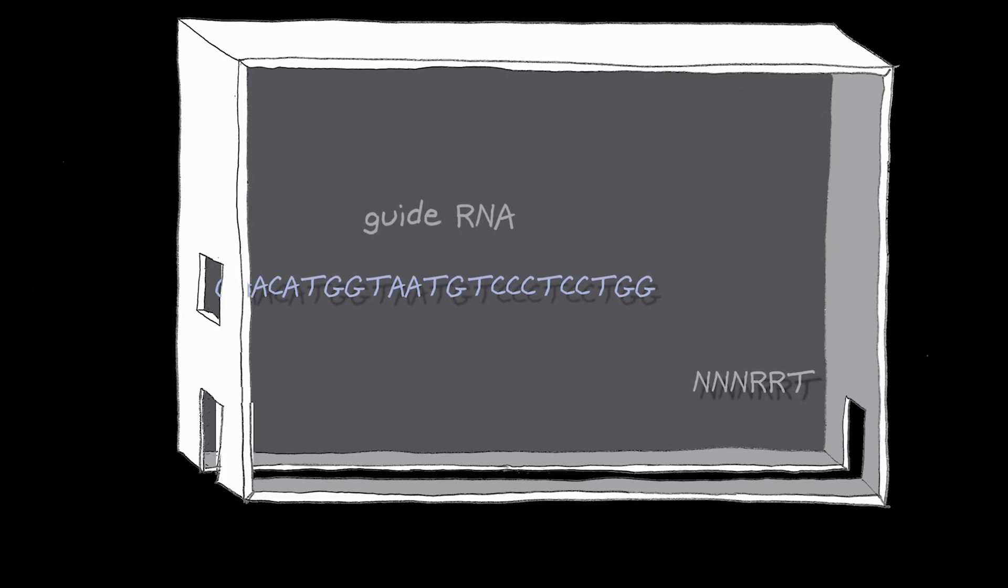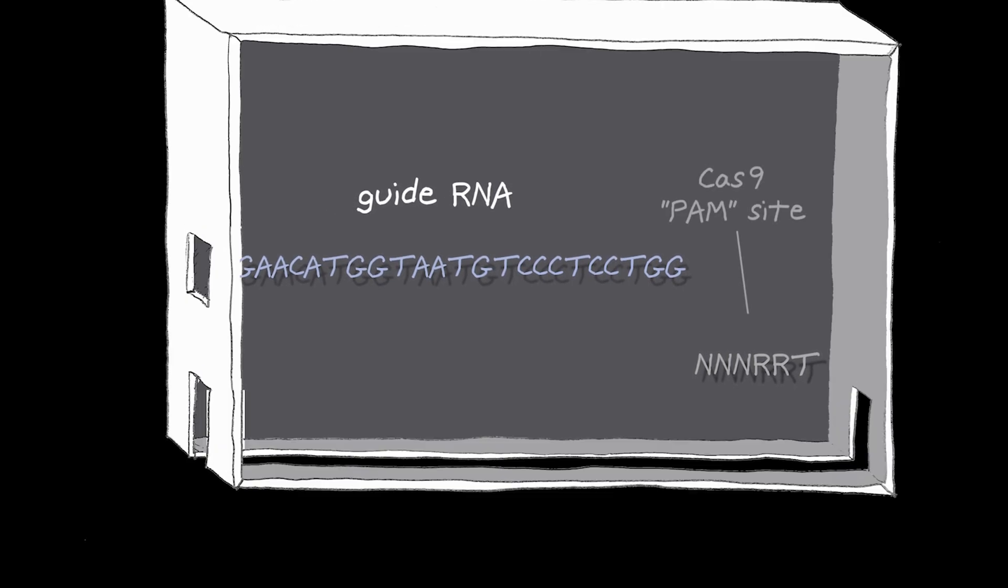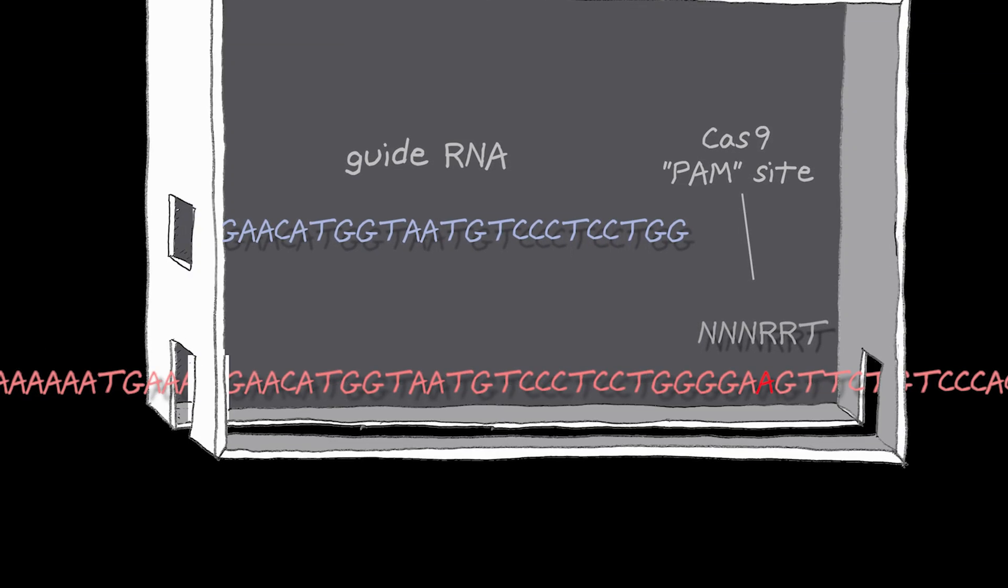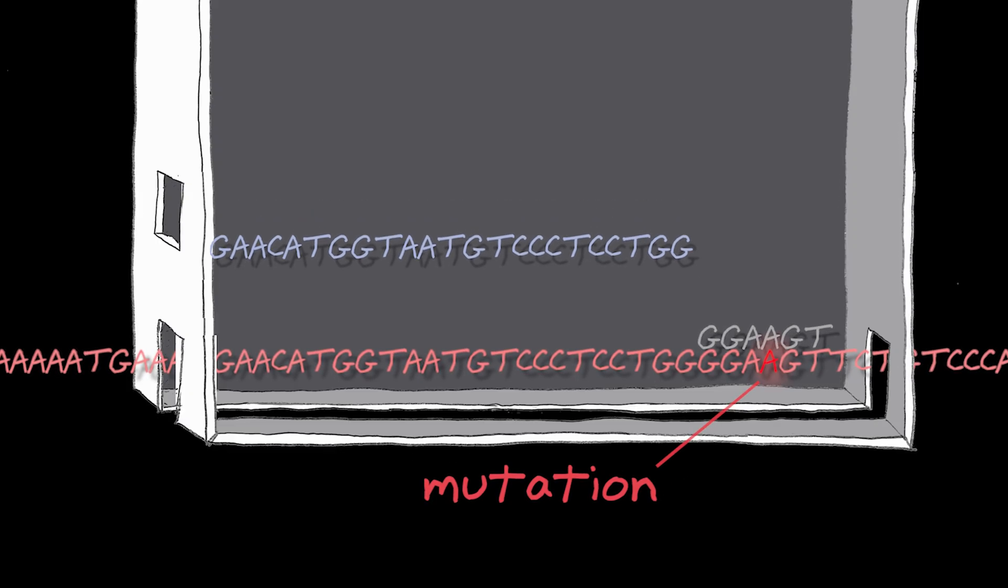The system uses two layers of recognition. One is the guide RNA, and one is the Cas9 enzyme itself, binding to the mutant copy of the DNA in order to recognize it.